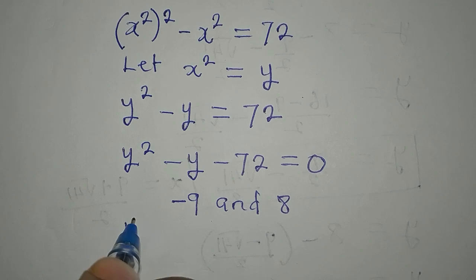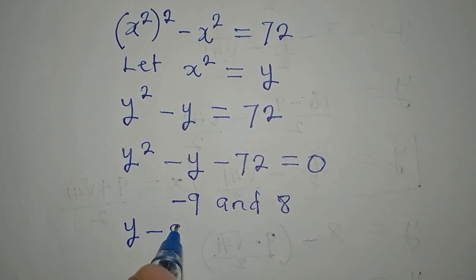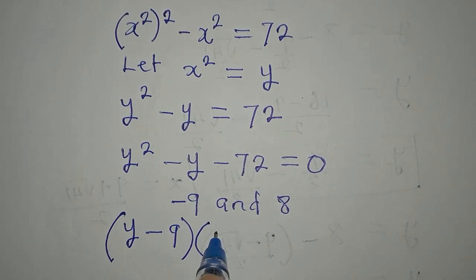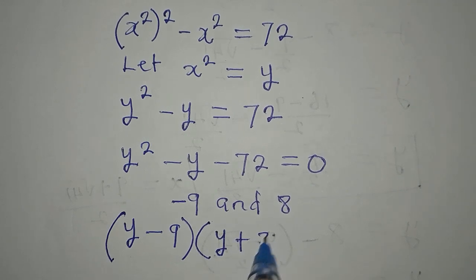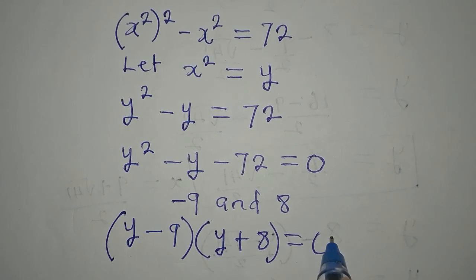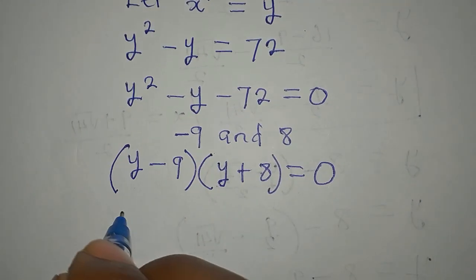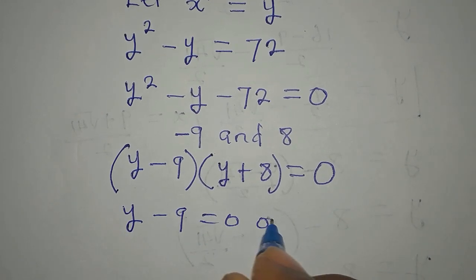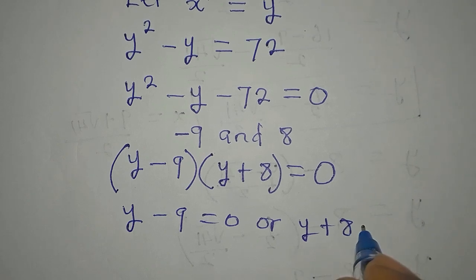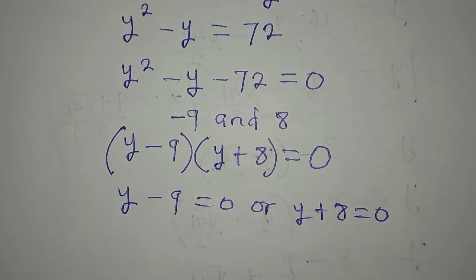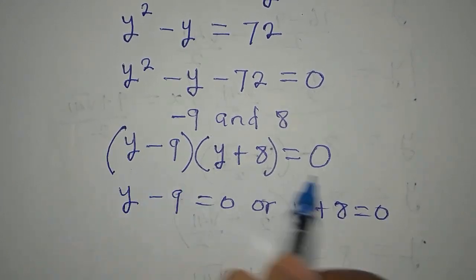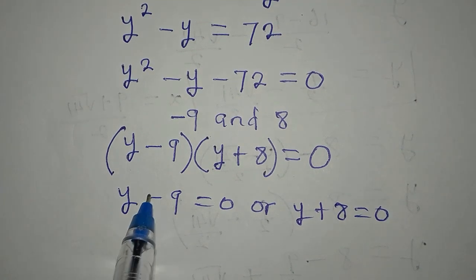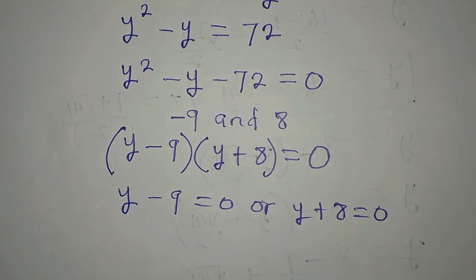So the factors now will be y minus 9, or we have y plus 8. Then we equate everything to 0. Now, we know that it's either y minus 9 equals 0, or y plus 8 equals 0. And we are equating this to 0 because you multiply these two to get 0, so one of them must be 0, or both of them can even be 0.